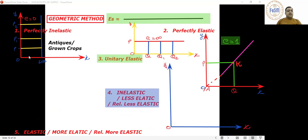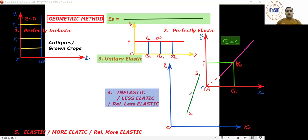Draw a supply slope — the same as before. At point K, quantity supplied is OQ and price is OP. Now, if I pull the cow's tail backward, where will it touch? At the X-intercept.